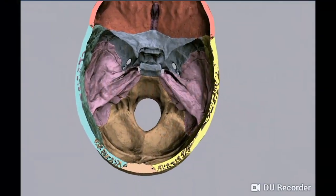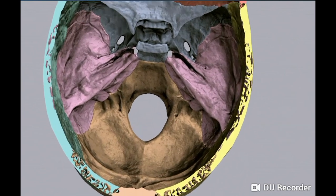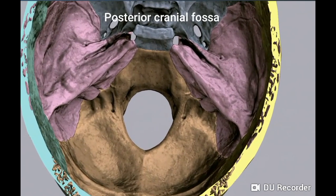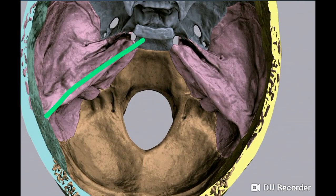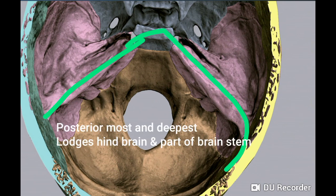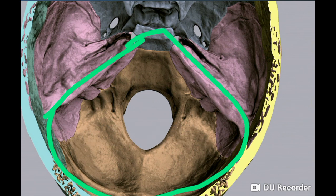We are discussing the posterior cranial fossa. It is the deepest of the three fossae and lodges the hindbrain, consisting of the cerebellum, pons, and medulla oblongata. These are the limits of the posterior cranial fossa.